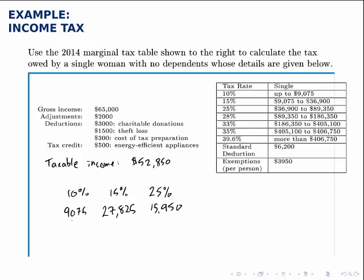Now we calculate the taxes owed from each bracket. We take 10% of $9,075 and get $907.50. We take 15% of $27,825 and get $4,173.75. And 25% of $15,950 gives us $3,987.50. To calculate the total tax owed, we add these three together and get $9,068.75.